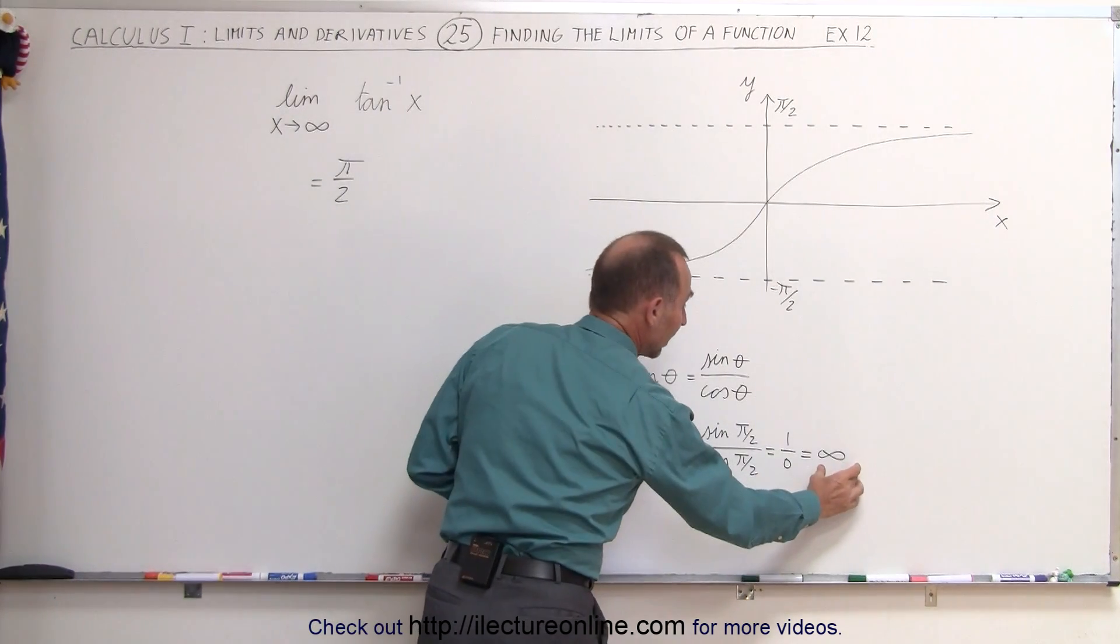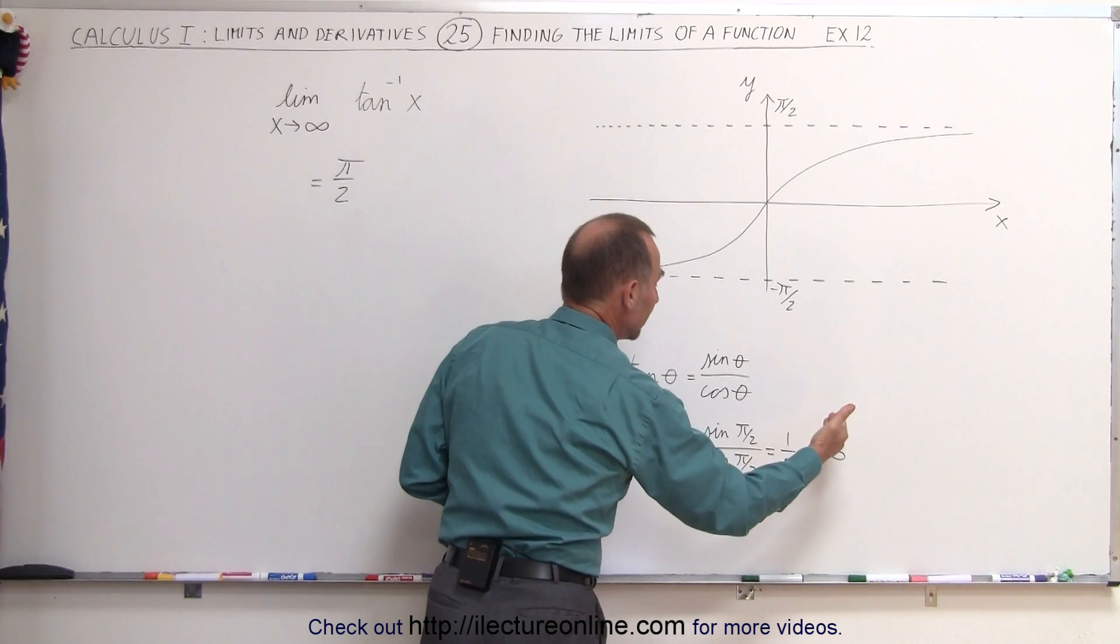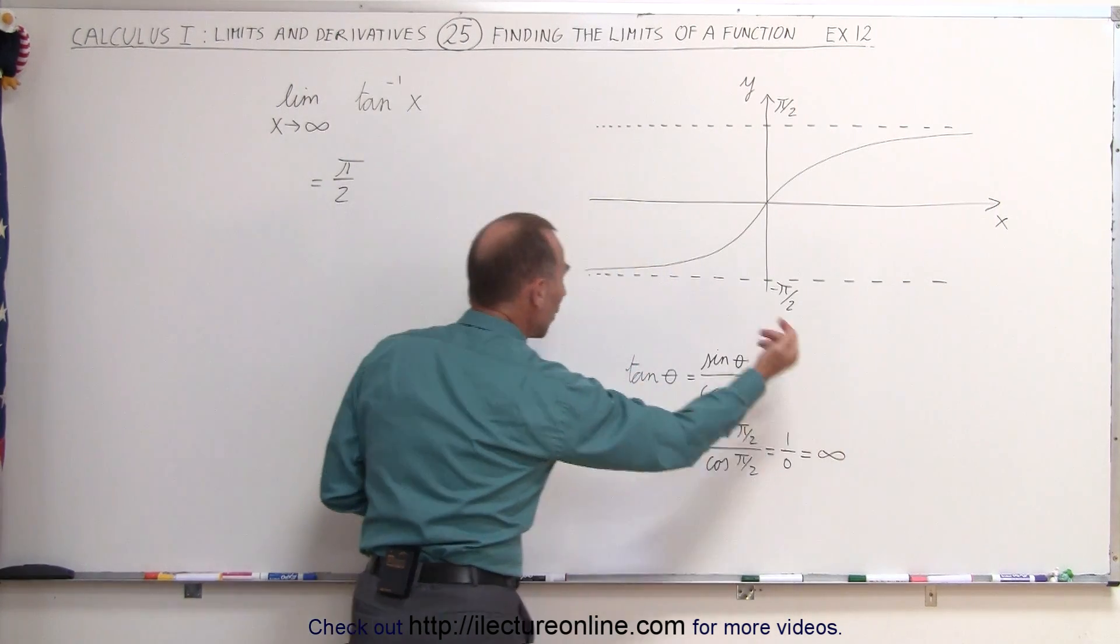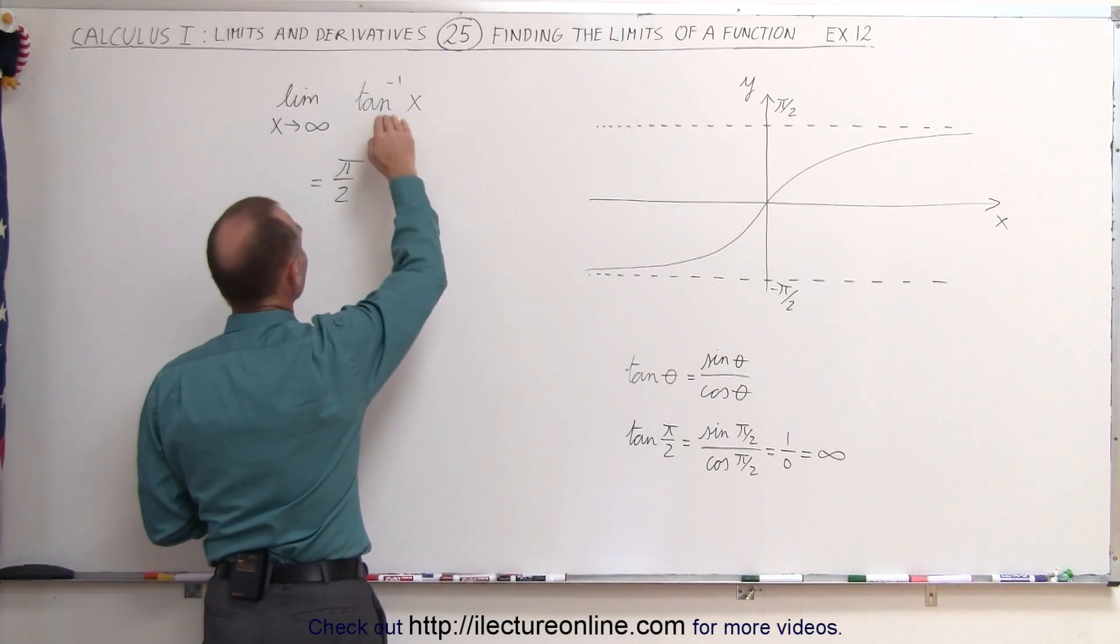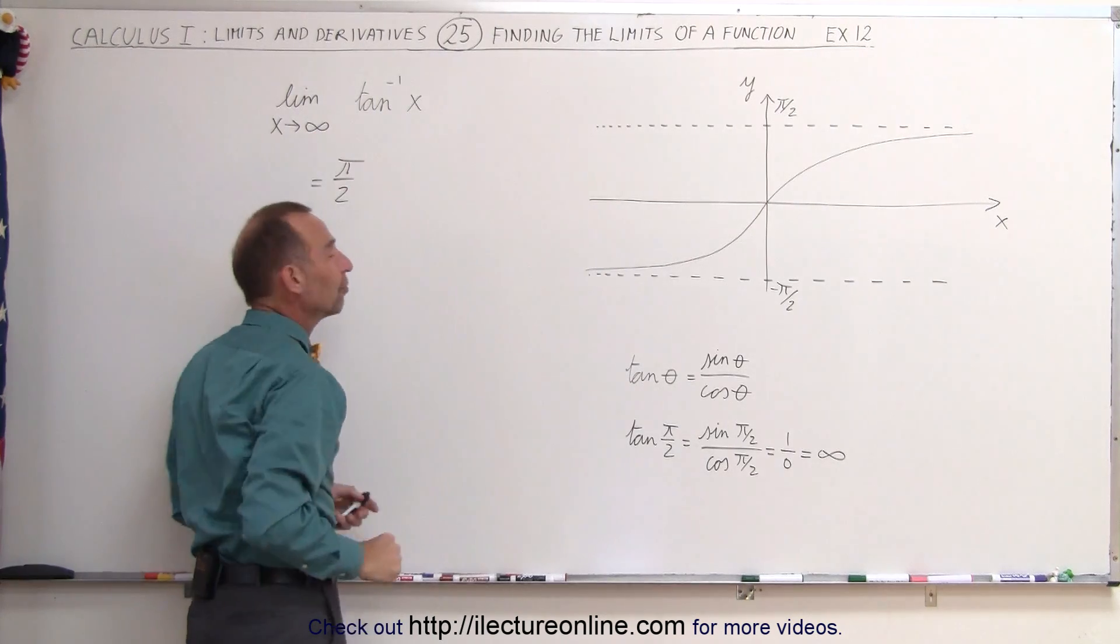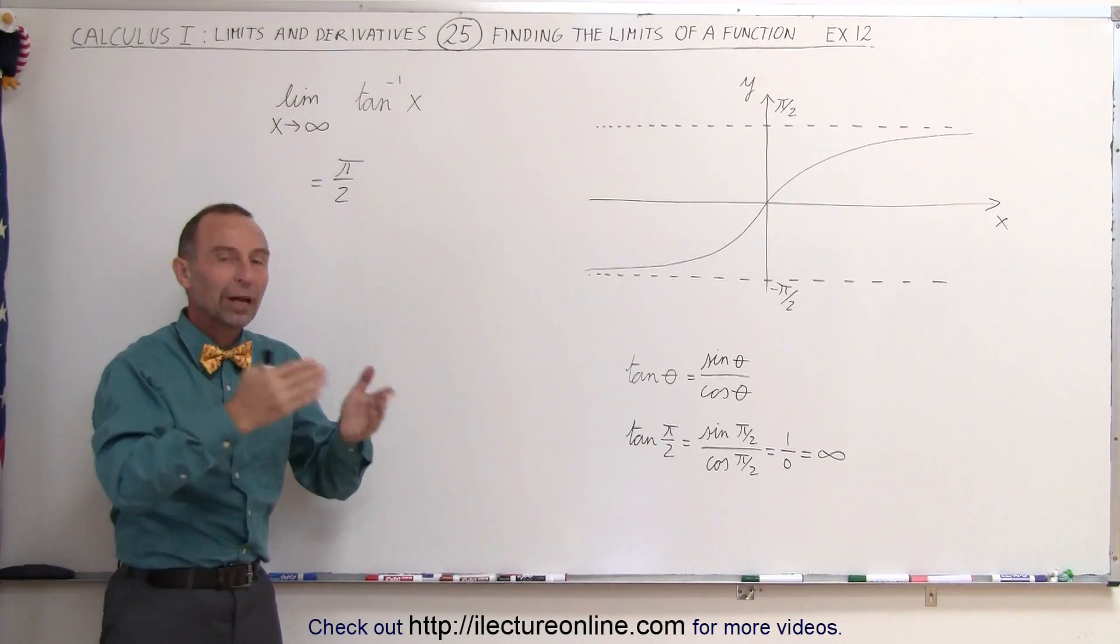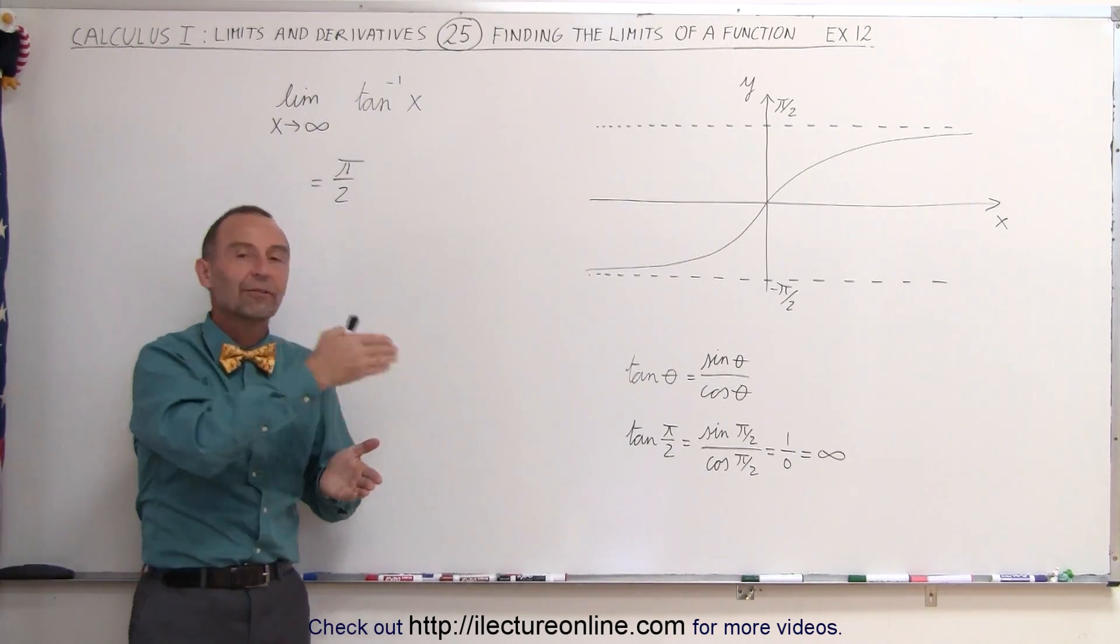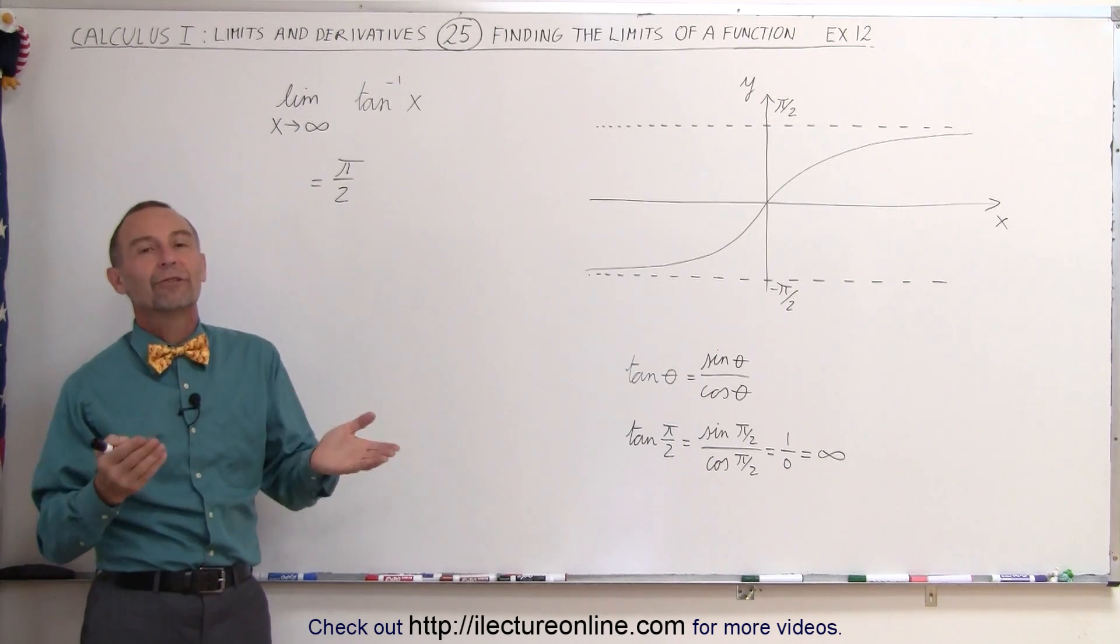So when we reverse it, if we let the ratio go to infinity and we want to know what the angle is, that's what we mean by the inverse tangent. The angle is pi over 2 when we let the ratio, sine of theta divided by cosine of theta, go to infinity.